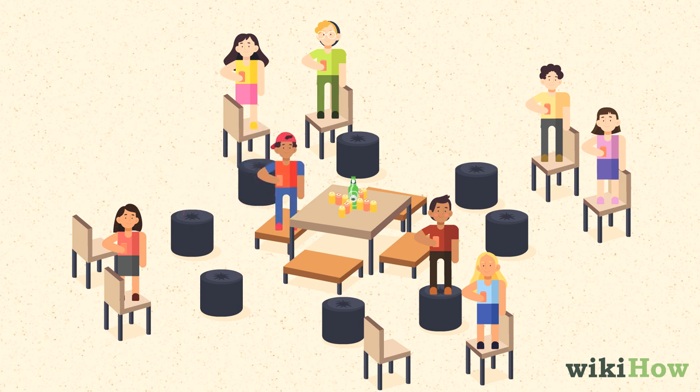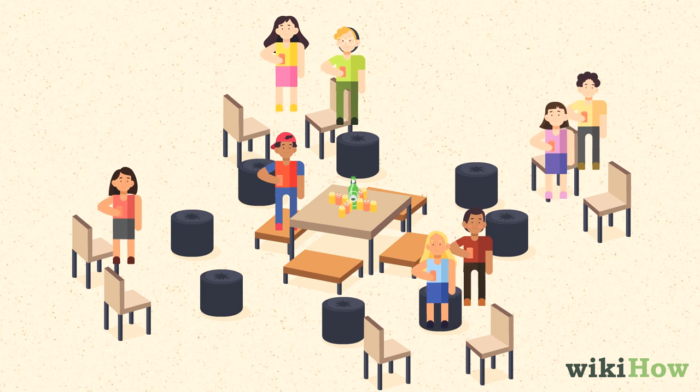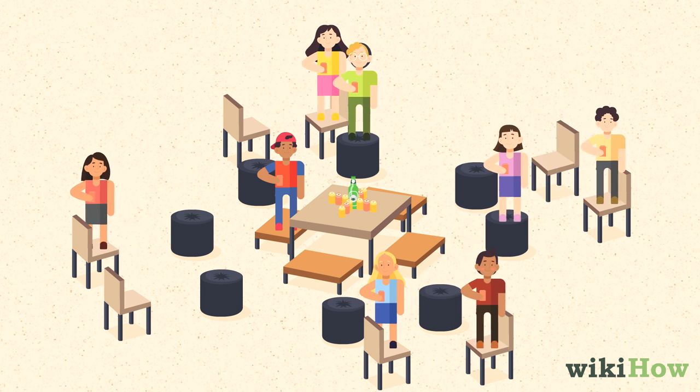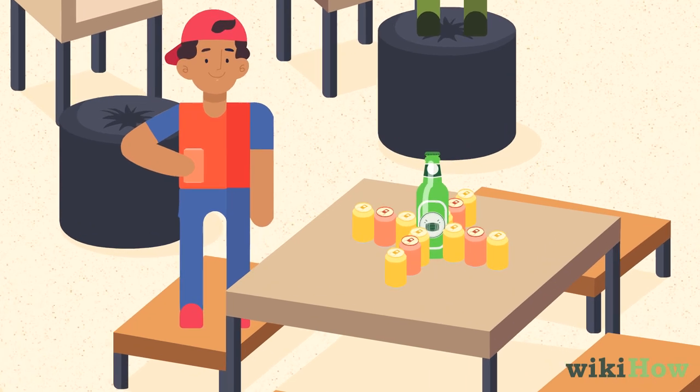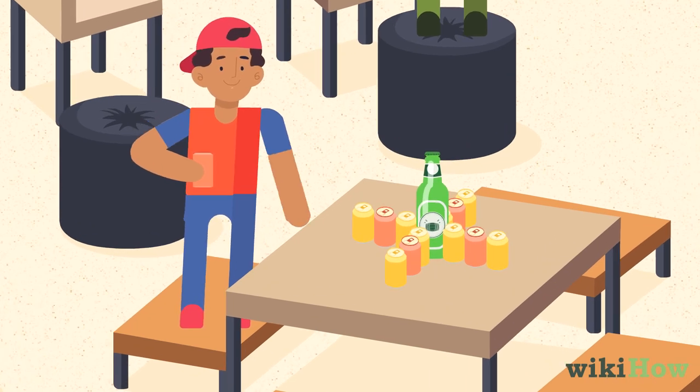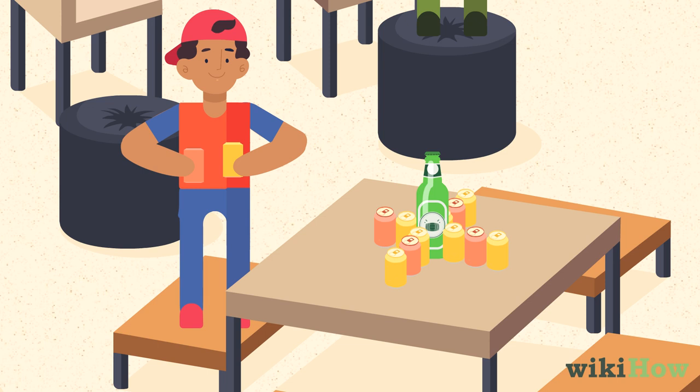Players can move one space on their turn, and they move clockwise around the circle in the zone they're in. Once a player reaches the space closest to the castle, they get another pawn, and move on to the next zone to the left.